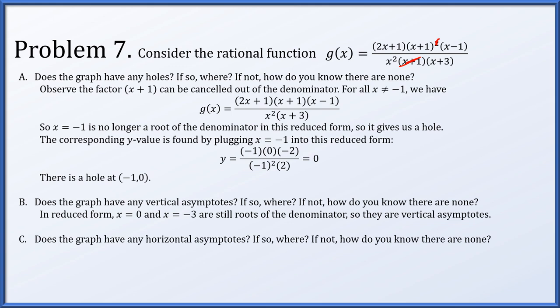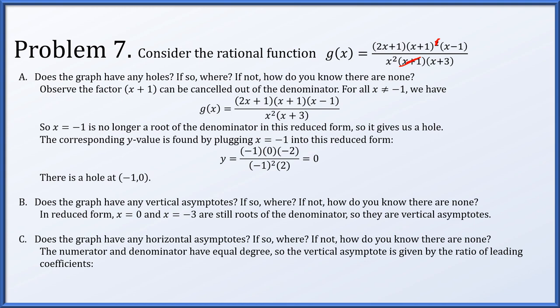Does the graph have any horizontal asymptotes? In reduced form, the numerator and denominator are both degree 3 — in the original form, both degree 4. Since they have equal degree, the horizontal asymptote is the ratio of leading coefficients. The numerator has leading coefficient 2 and the denominator has leading coefficient 1, so the horizontal asymptote is y = 2.